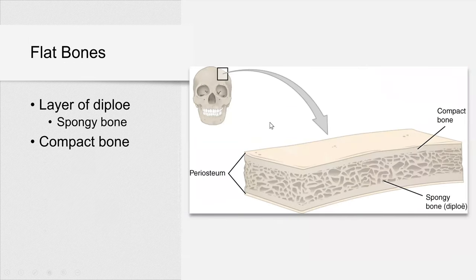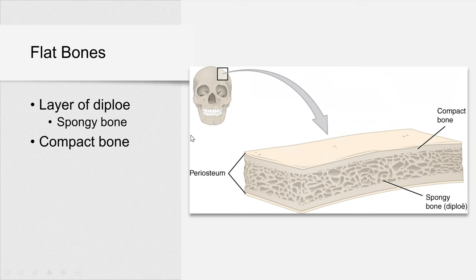Flat bones have a sandwich-like structure: two compact bone layers with spongy bone in between. The spongy bone layer has the French name diploe. Flat bones include the bones of your skull, sternum, and ribs, and all have this structure.